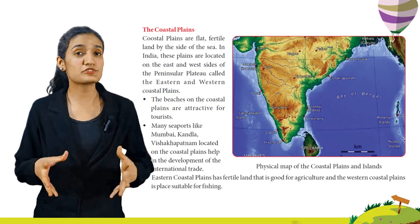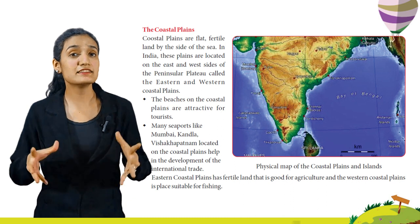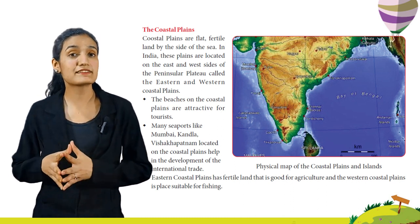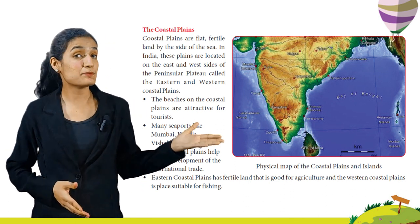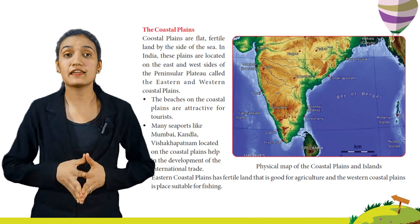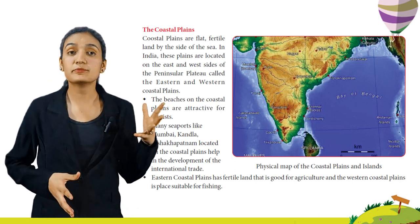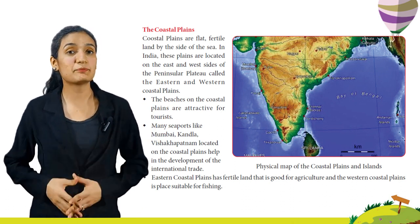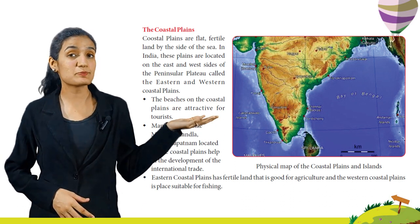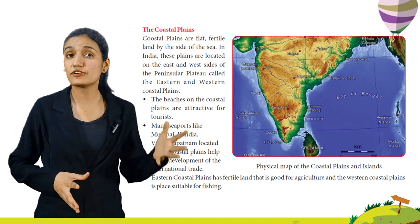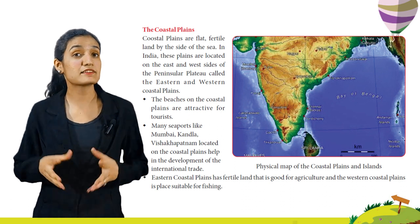Coastal plains are flat, fertile land by the side of the sea. In India, these plains are located on the east and west side of the Peninsular Plateau, called the Eastern and the Western Coastal Plains. The beaches on the coastal plains are attractive for tourists. Many seaports like Mumbai, Kandla and Vishakhapatnam located on the coastal plains help in the development of international trade. Eastern coastal plains are fertile land good for agriculture, while the western coastal plains are suitable for fishing.